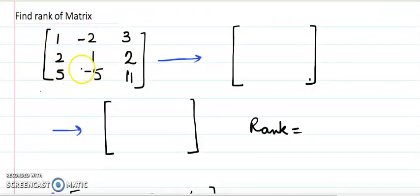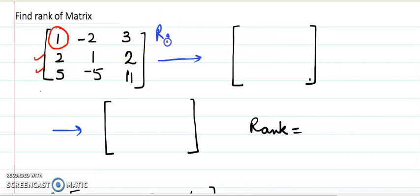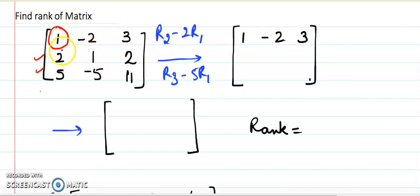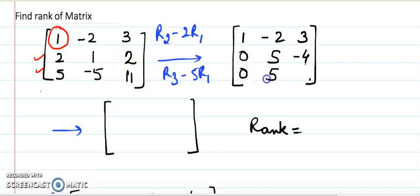Let's see one more example. I have taken a 3×3 matrix. To find its rank using row echelon form, I will use the A11 entry to make the entries 2 and 5 below it zero. The transformation is: in R2 subtract 2 times R1, and in R3 subtract 5 times R1. Calculations: 2 minus 2 = 0, 1 plus 4 = 5, 2 minus 6 = minus 4; 5 minus 5 = 0, minus 5 plus 10 = 5, 11 minus 15 = minus 4.